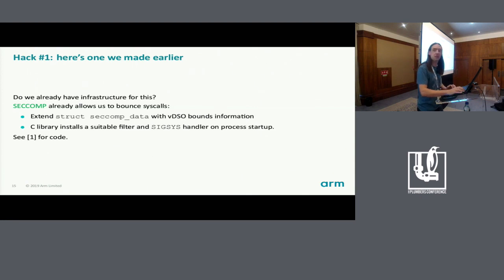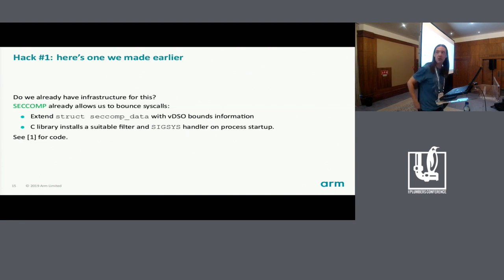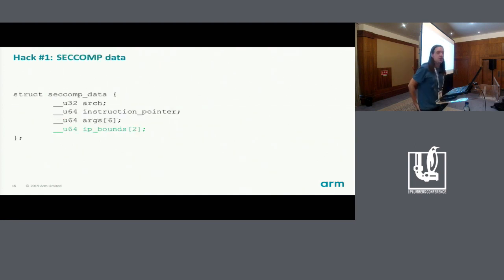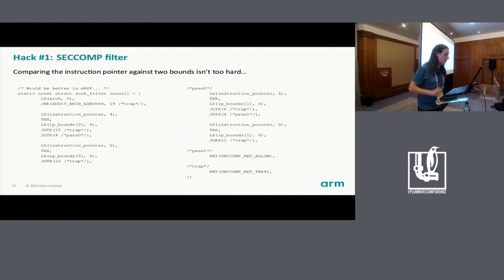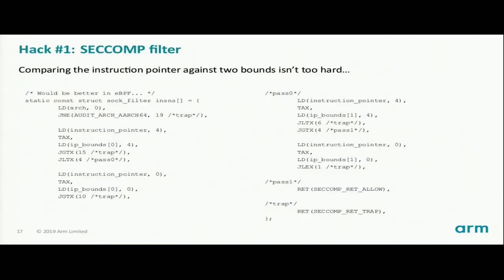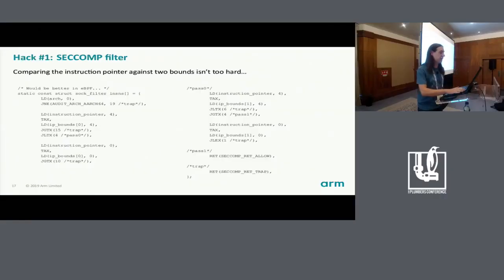I have some hacks in a Git tree with references at the end of this slide deck. I tacked a lower and upper bound for the instruction pointer onto the end of the existing seccomp data, to say whether the IP is in the VDSO or not. Then I cooked up a seccomp BPF filter — you don't really need to read it, but to give an indication of the scale: it's just checking the instruction pointer against two bounds. If it's within bounds, we allow the syscall; if it came from some other user space address, we trap it using a signal. This uses classic BPF because I hadn't fully got my head around eBPF at the time, so we could probably do a bit better.